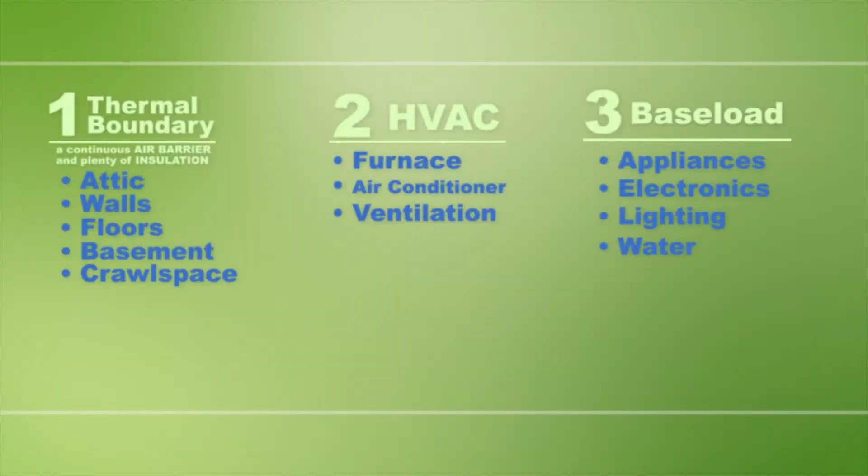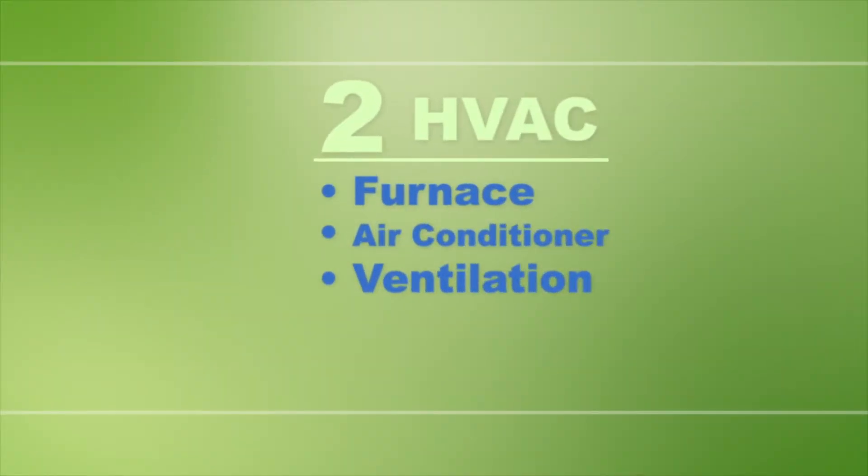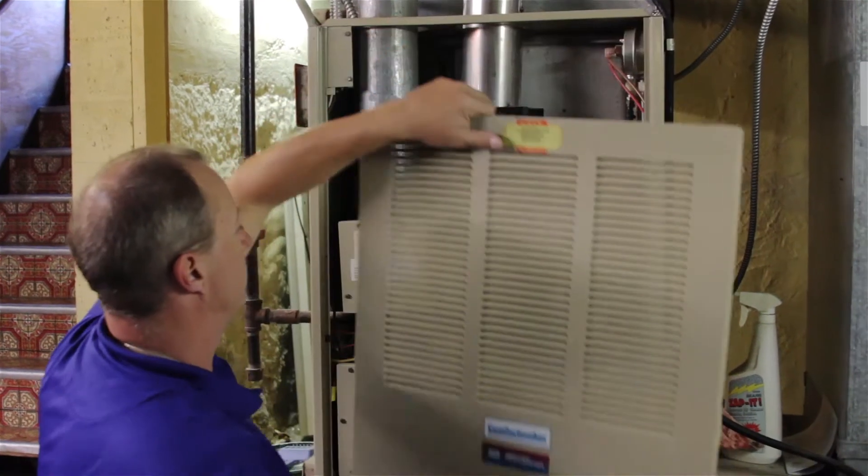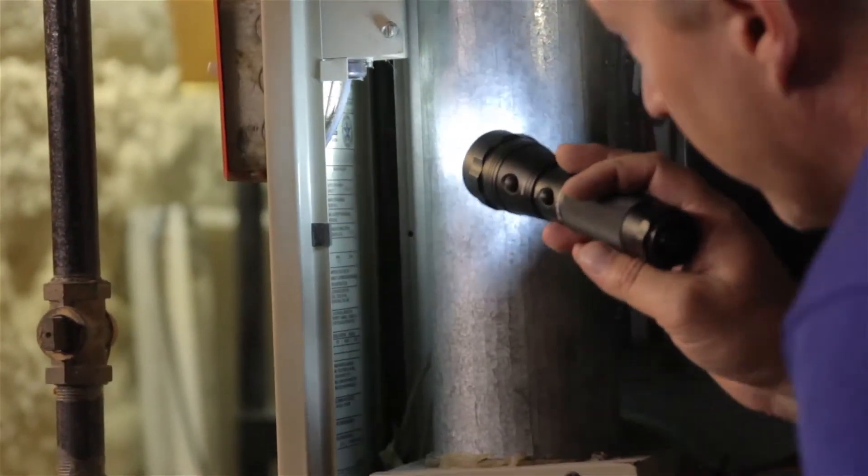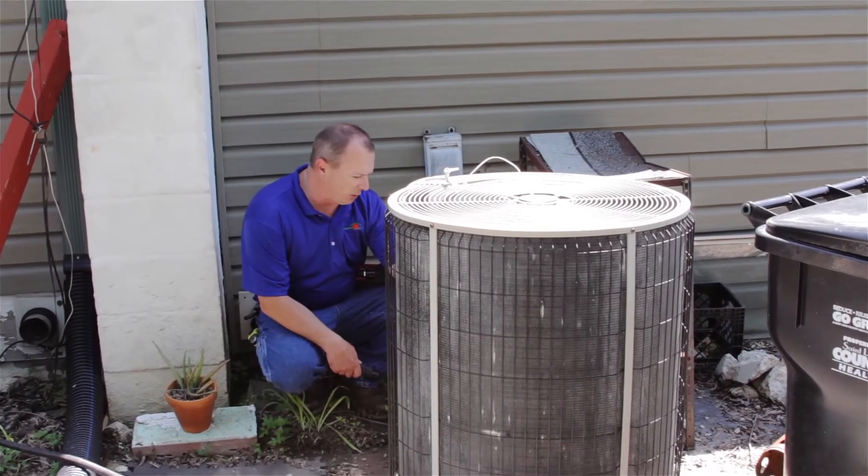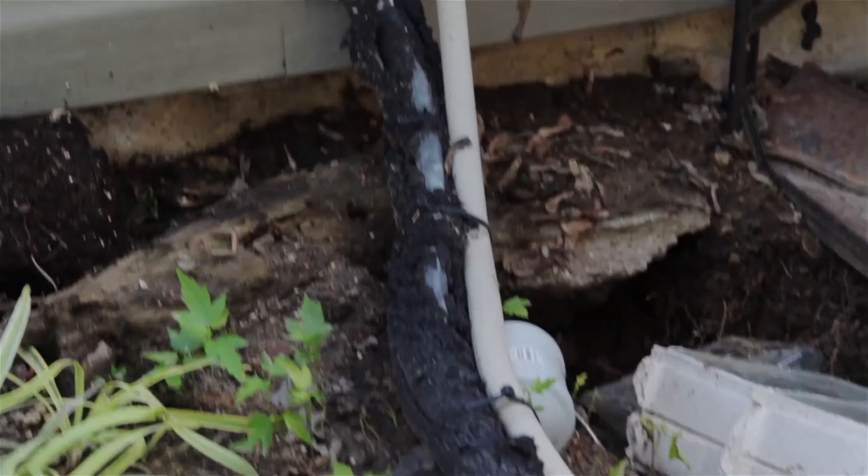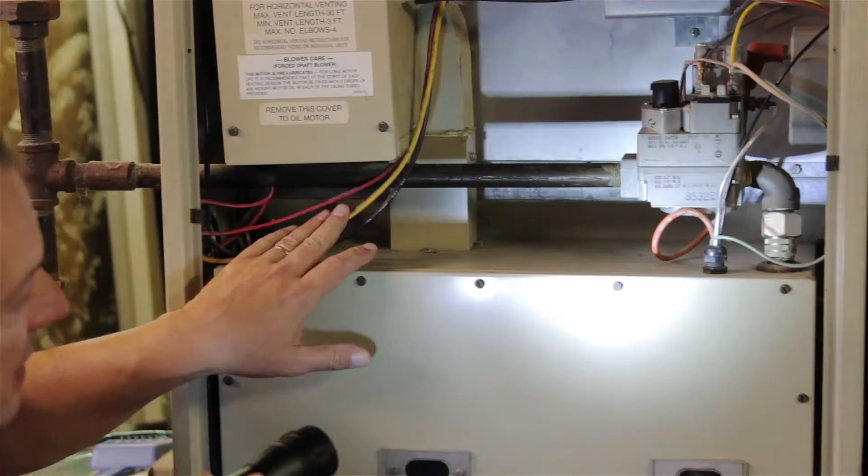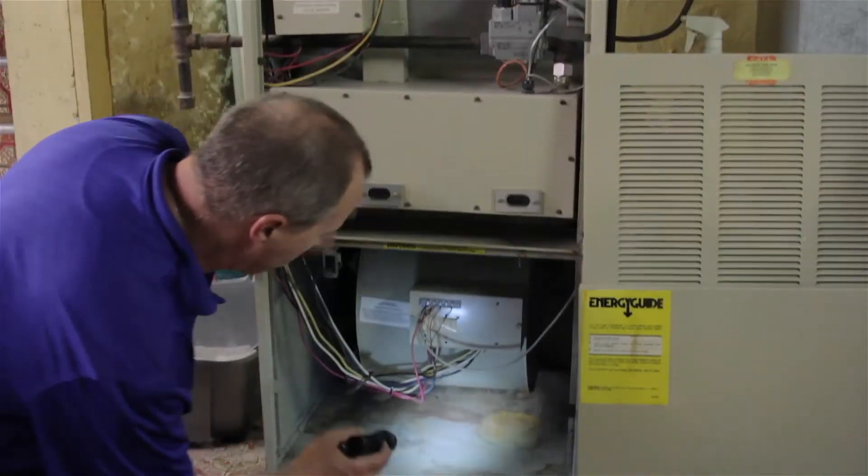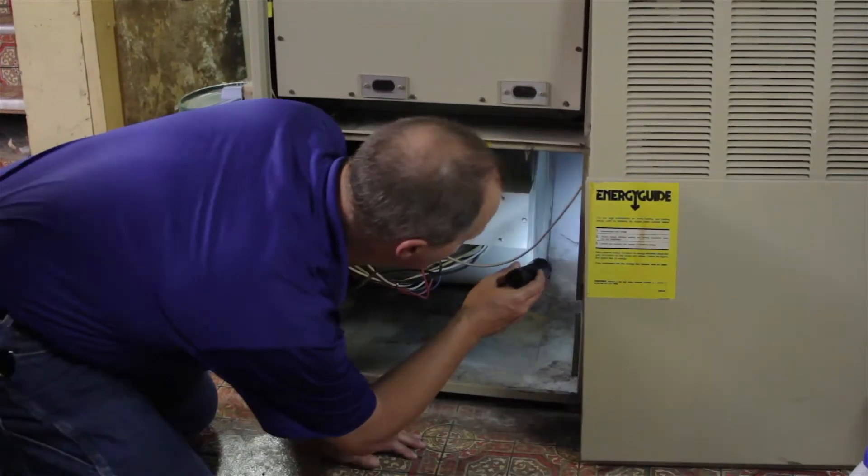Next, you will need to take a look at your HVAC equipment. You need to check out your furnace and air conditioner so that you know the efficiency ratings. Technology has resulted in more energy-efficient heating and cooling equipment in the past 20 years. So, if your home has older equipment, it may be time to consider a newer and more energy-efficient model.